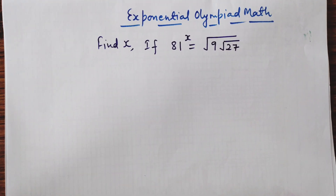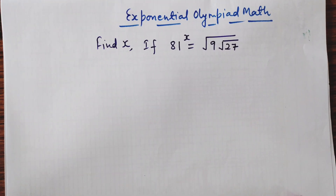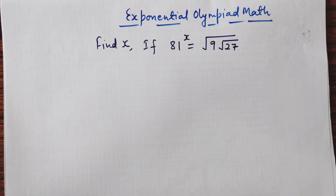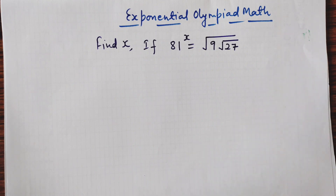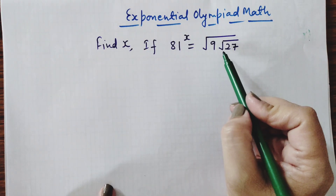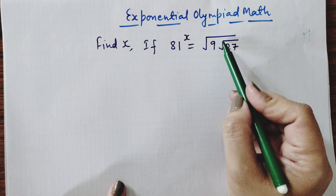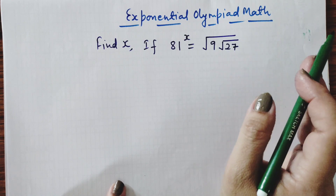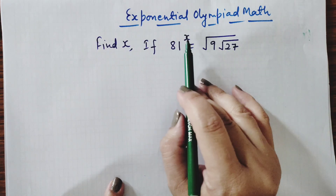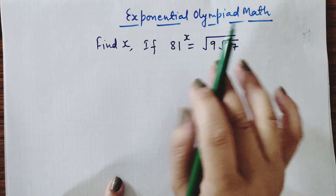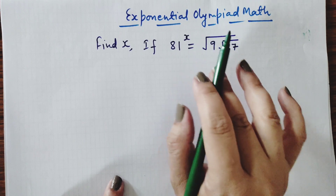Hello everyone, welcome to my YouTube channel. Today we are going to do exponential math in which we need to find the value of x in this expression: 81 raised to the power x, and the square root of 9 inside one more root, equals 27. So how do we find this x value from this exponential problem?